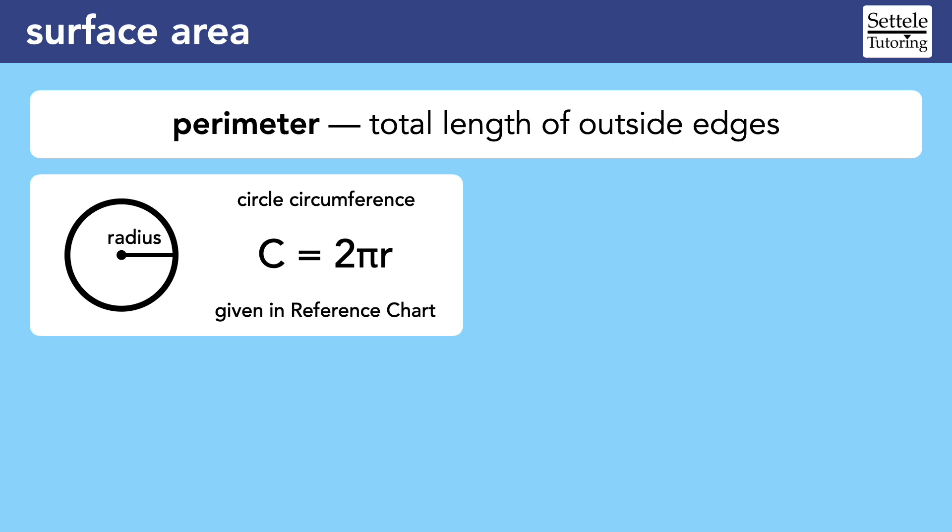On the SAT, this formula is given to us in the reference chart. But circumference is the only perimeter formula given to us in the reference chart. We might memorize that the perimeter of a square is four times the side length, but that's kind of obvious just by knowing what a square is.